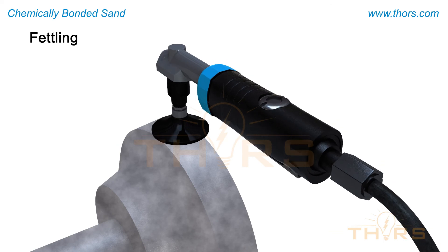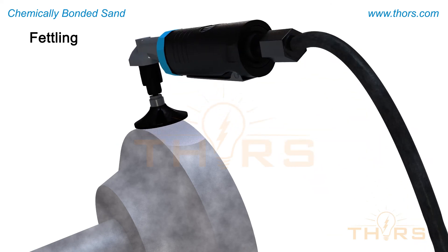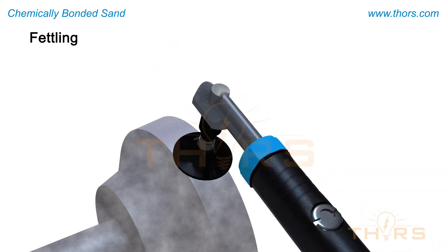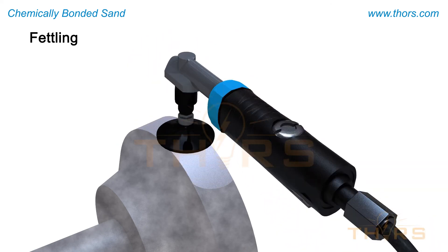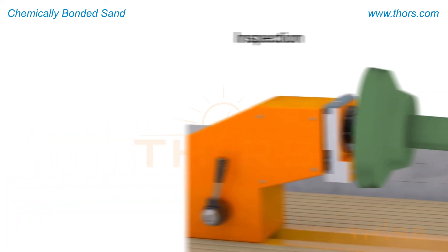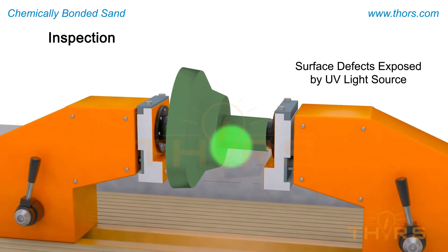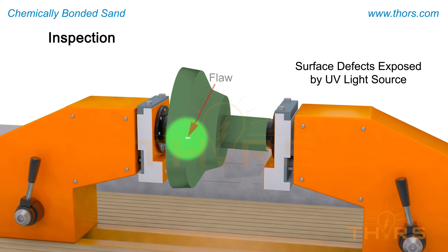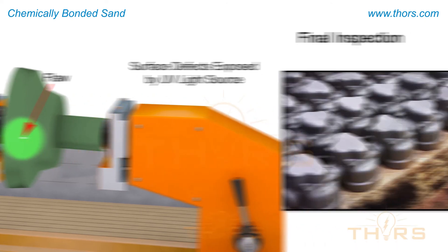The fettling process is where the unwanted metal is removed and the rough edges are cleared from the castings. The casting inspection process involves separating defective castings and also verifying the properties and dimensions of the castings.